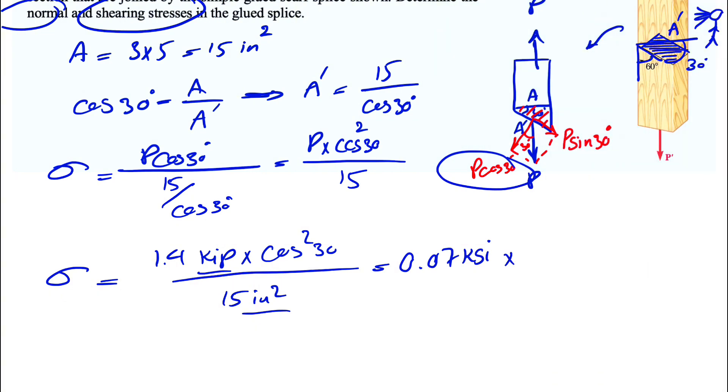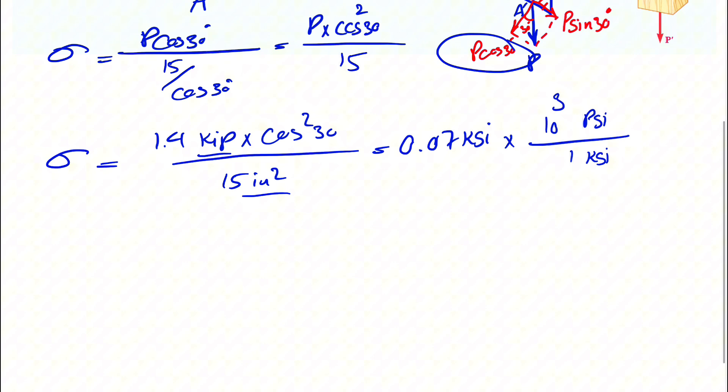And as I said, if we want to convert it to psi, we know 1 ksi is equal to 1000 psi. So the normal stress here would be 70 psi.